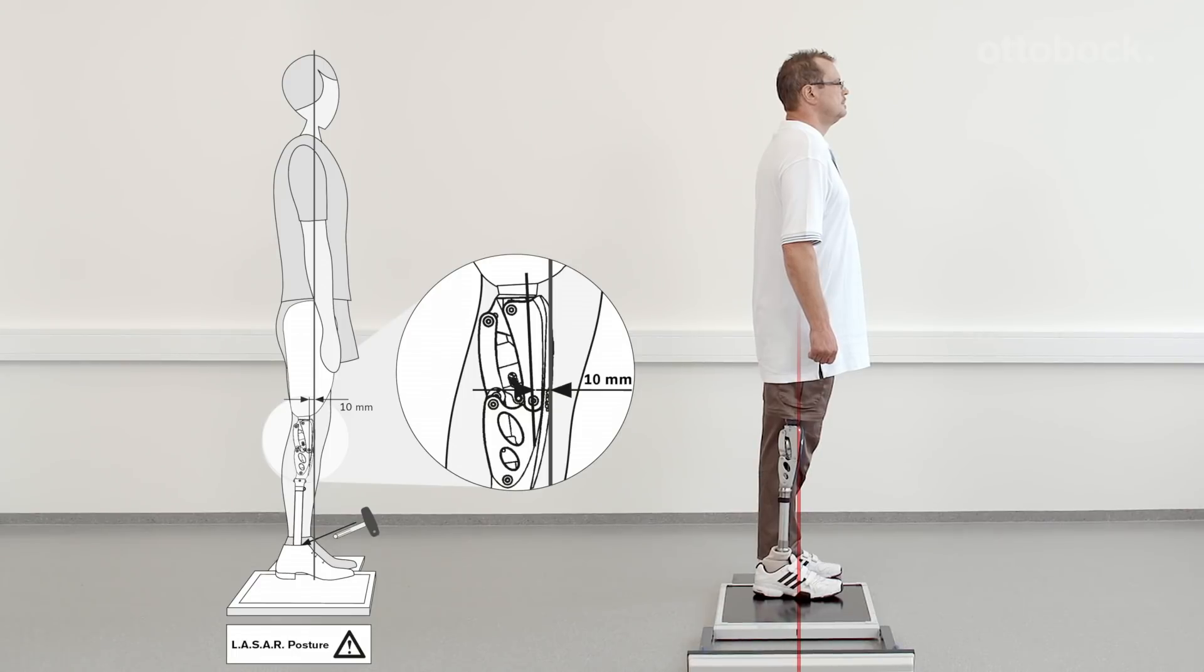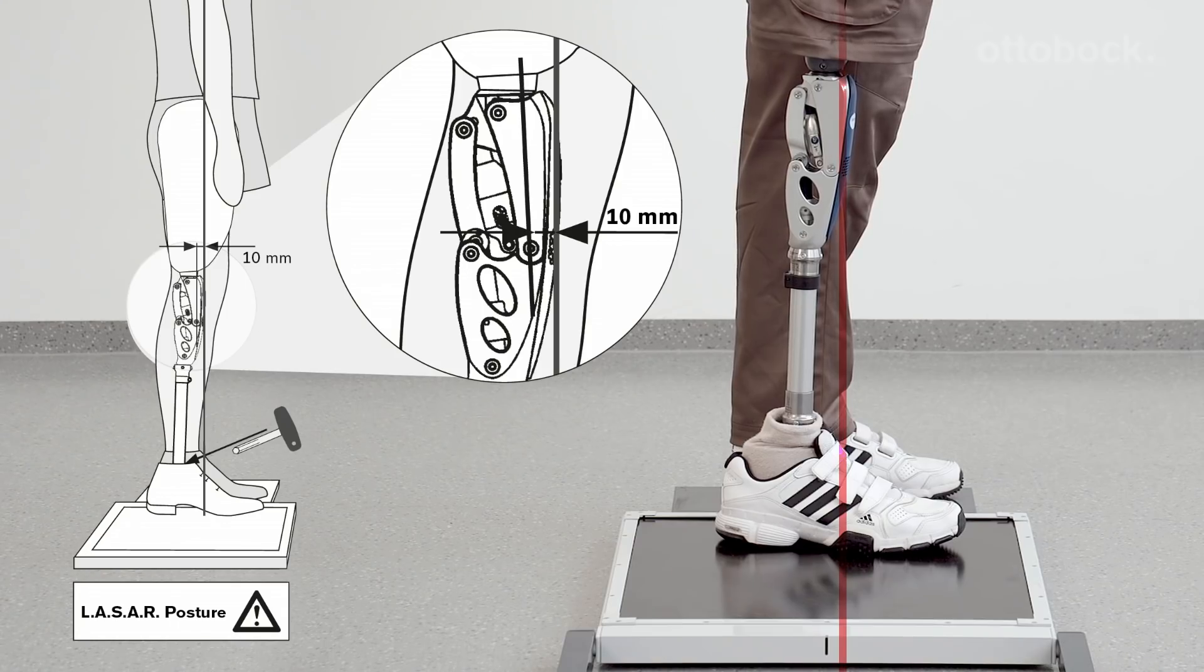The sagittal plane alignment should now be adjusted solely by changing plantar flexion, so that the load line runs about 10 mm in front of the anterior lower knee axis.